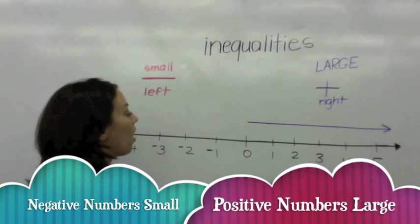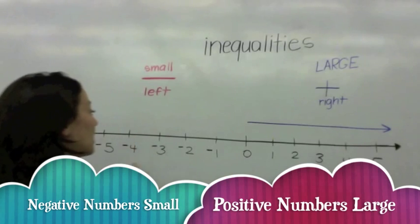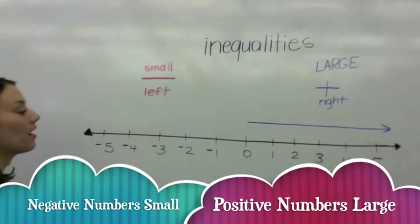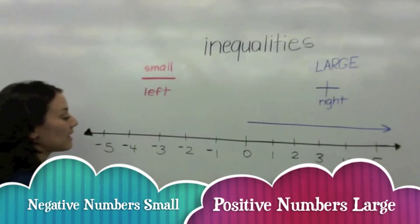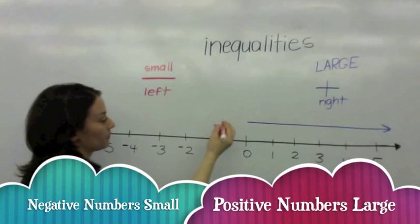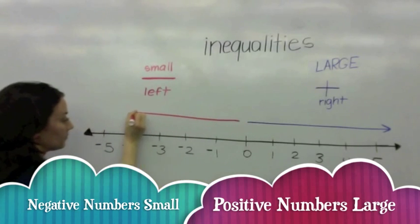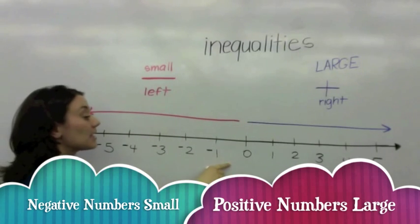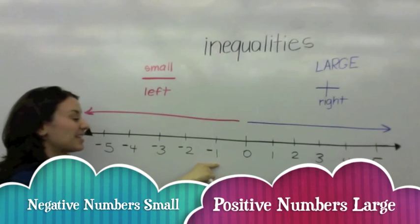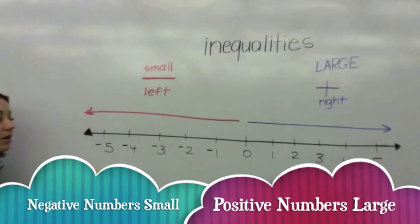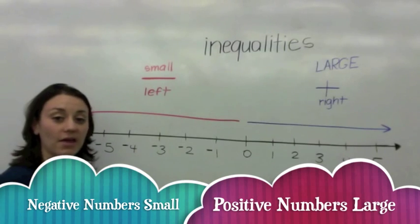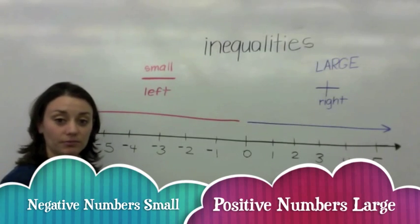On the left side of a number line are negative numbers. These numbers get smaller as they move away from 0.